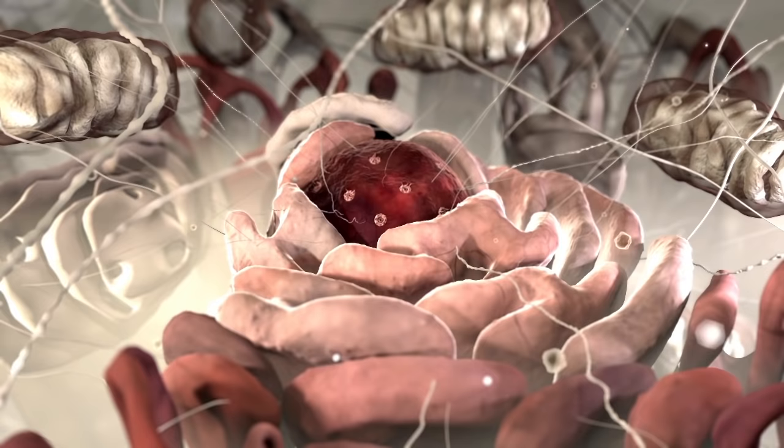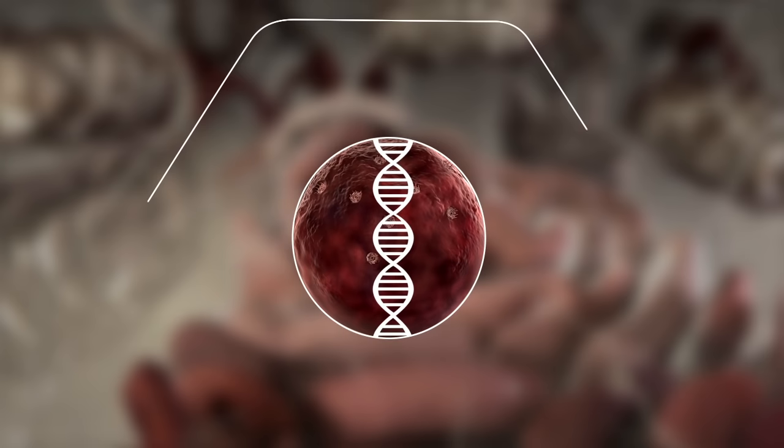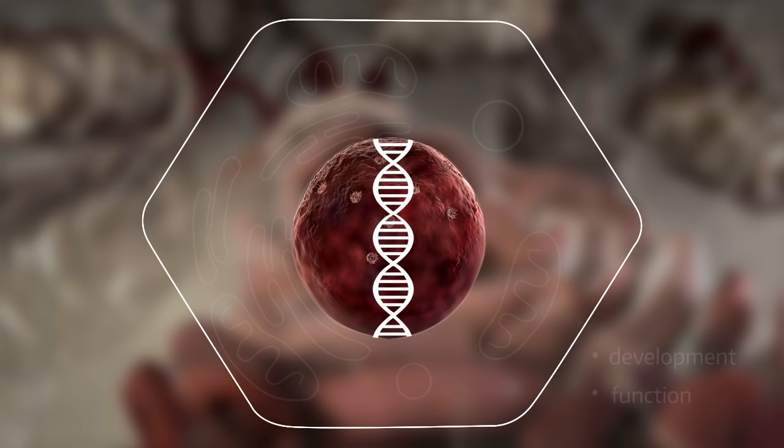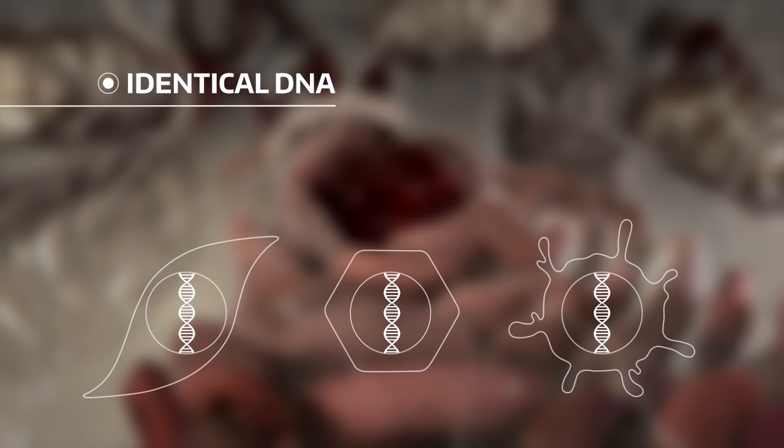They have different structures and functions but contain similar components like the nucleus. The nucleus contains the DNA that encodes the instructions for cell development and function. This information is arranged into segments of DNA called genes. Almost every cell contains identical copies of DNA.